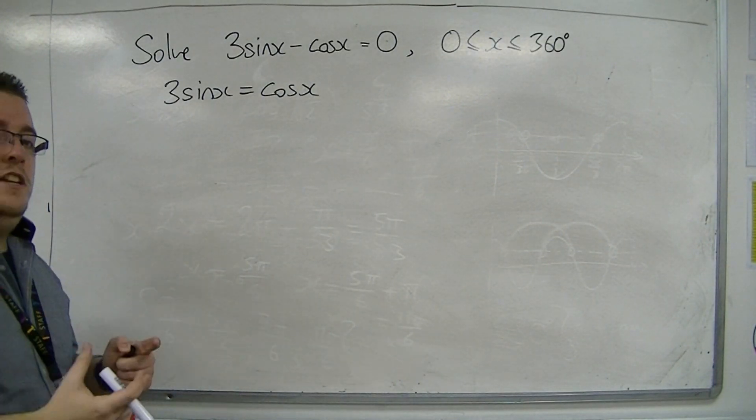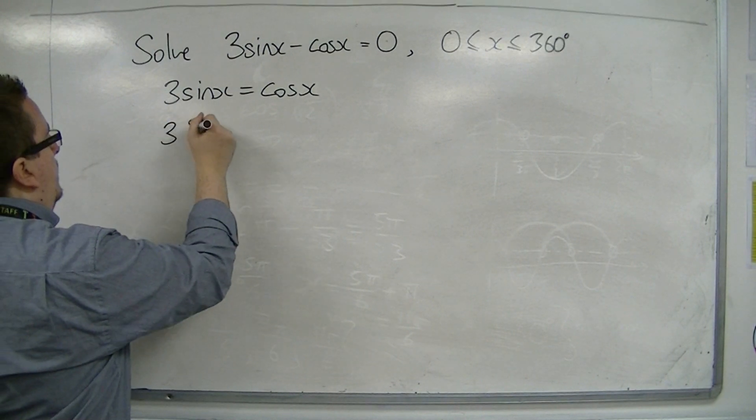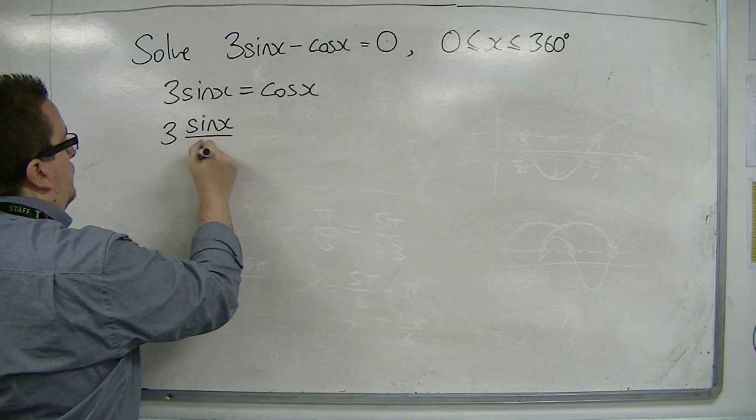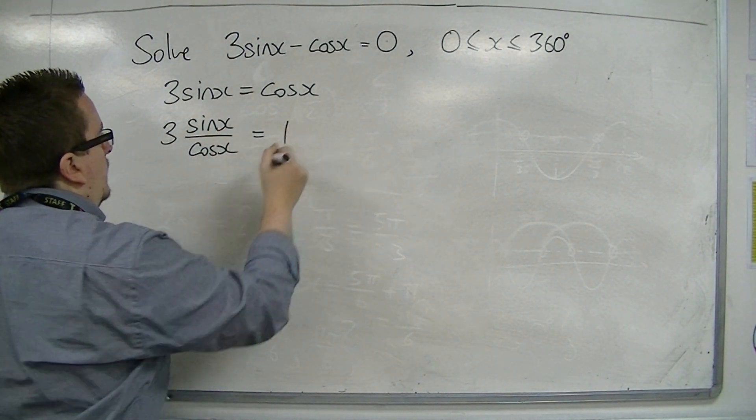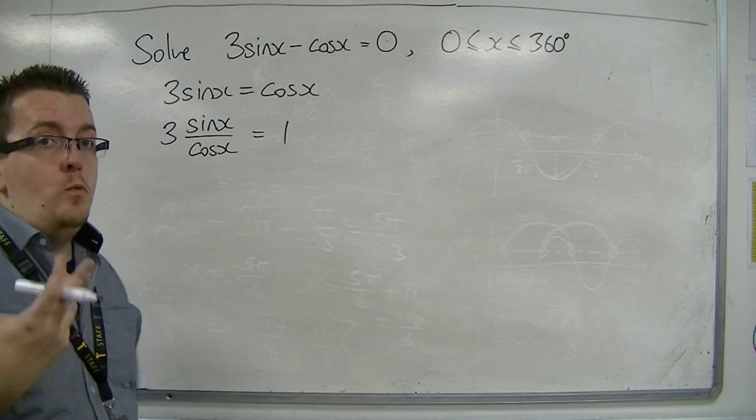Now divide both sides by cosine. So don't forget that cosine divided by cosine would be 1.